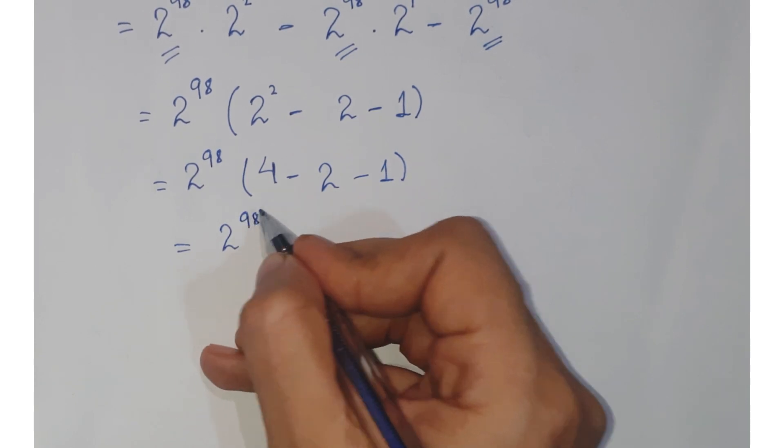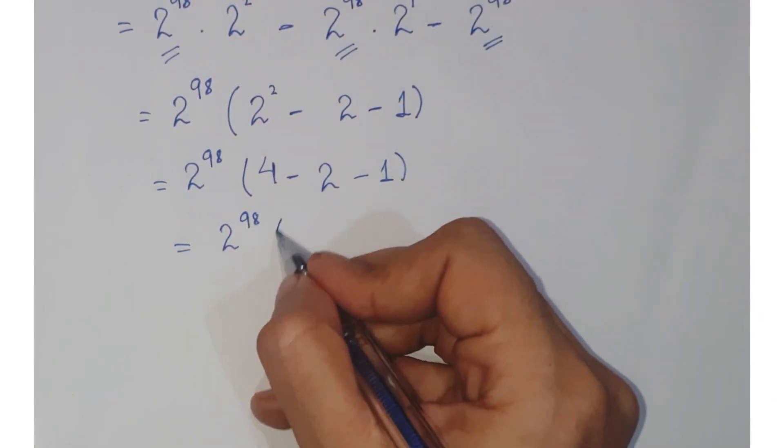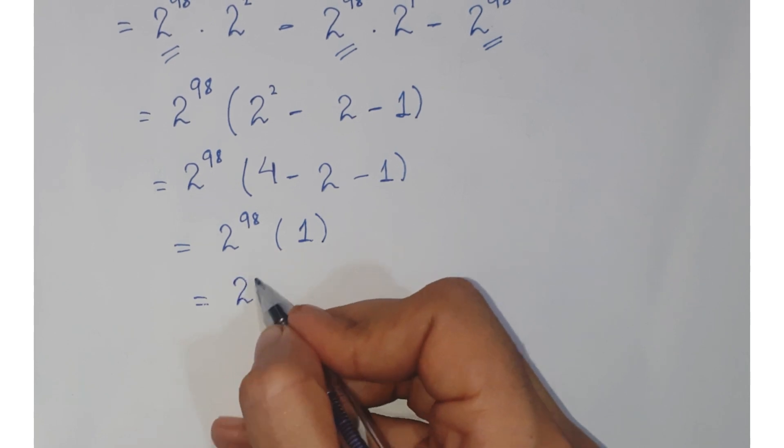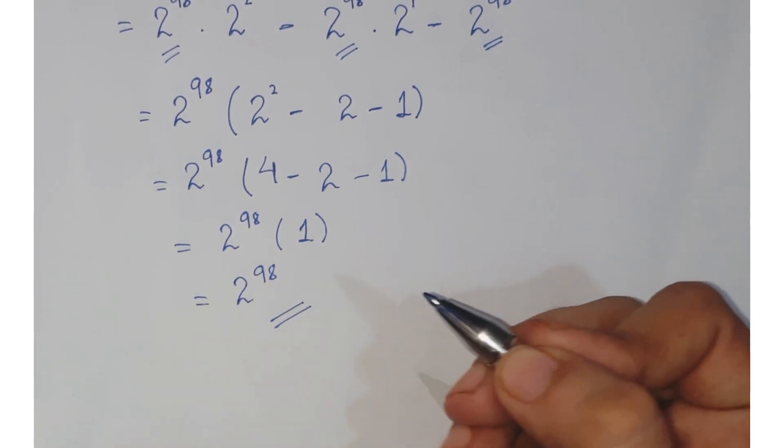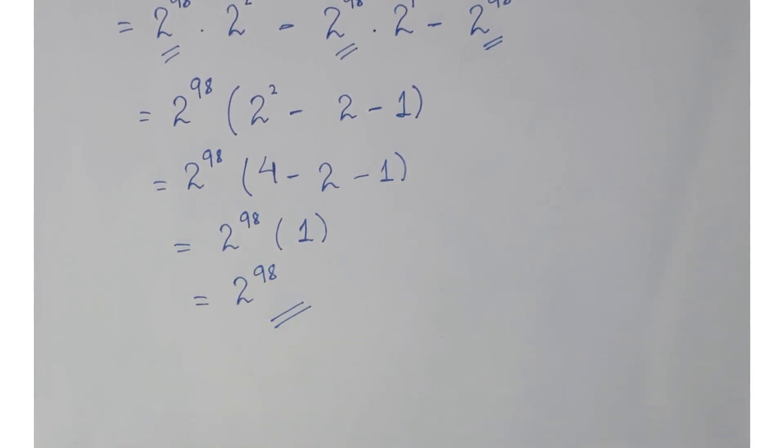I hope you guys have understood the reason of splitting 100 into the smallest power that is 2 raised to the power 98 and I am done with this question. I hope you guys like the video, kindly subscribe, thank you.